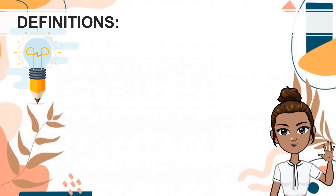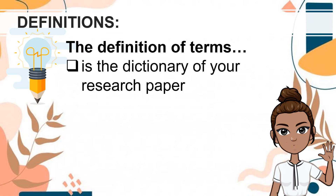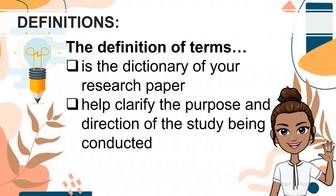To complete the research, it is imperative to unlock terms used in the paper, especially if there are jargons used. The definition of terms is just like the dictionary of your research paper. The difference is it includes only the terms used in your study. This means that you have to take note of the words you've used, especially the ones specific only to your field, formulas, acronyms, etc. The definition of terms section will help clarify the purpose and direction of the study being conducted.